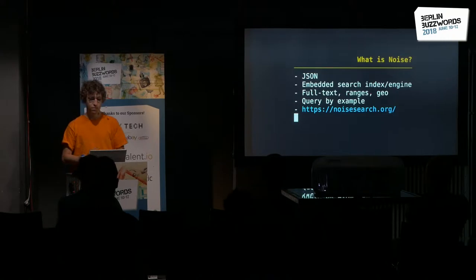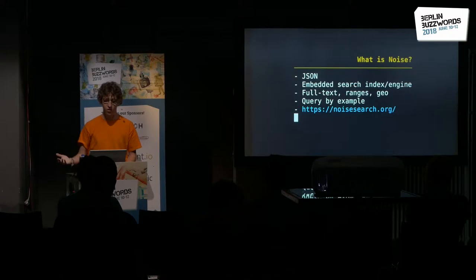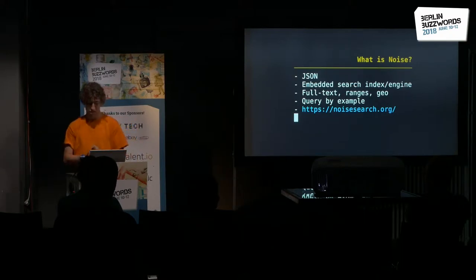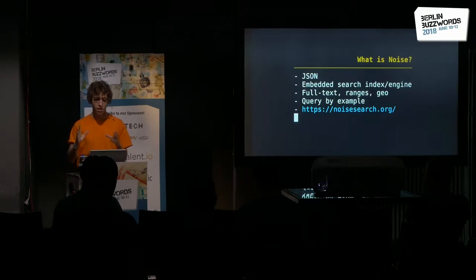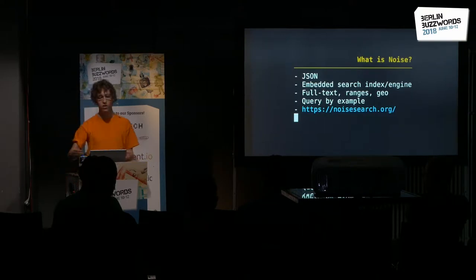So what is Noise? Noise is all about JSON. You input JSON and you get JSON out. It's an embedded search engine. The important part is it's really similar to Lucene — not talking about the level of Elasticsearch or Solr, but really on the Lucene level. It's an embedded thing. It can do full-text search, ranges, and Geo. I would even claim it does Geo properly, because it's not just a Geo hash or space-filling curve, but a proper R-tree implementation.